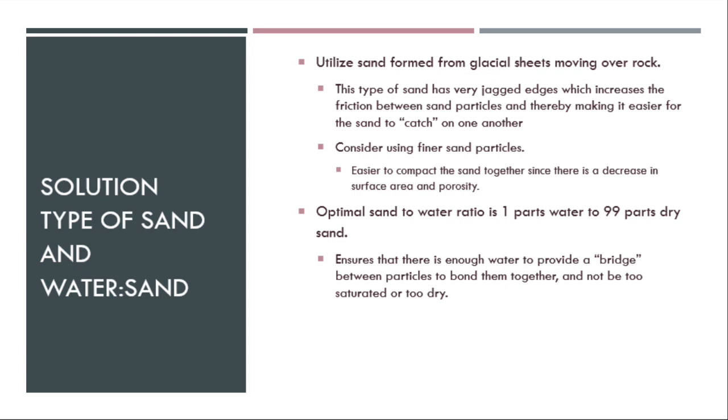So from doing this research and looking at these different sources, it was discussed that sand created from glacial sheets rubbing against each other and creating this very rough and coarse sand would be best. However, it's better if these sand particles are small so then there's less space between the particles to create looseness. Instead, they could be more tight and compact.